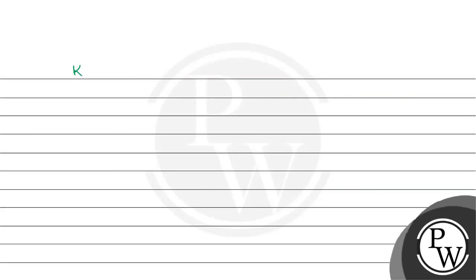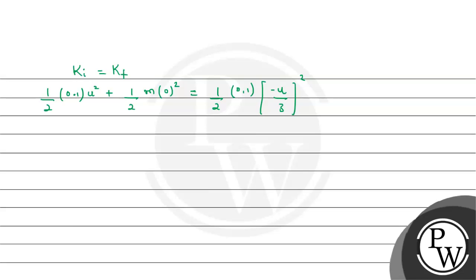For the second equation, let us apply conservation of kinetic energy: ki = kf. So: half of 0.1 times u² (kinetic energy of ball 1 initially) plus half of m times 0² (kinetic energy of ball 2 initially) equals half of 0.1 times (−u/3)² — the kinetic energy of ball 1 finally.